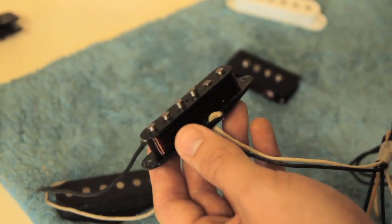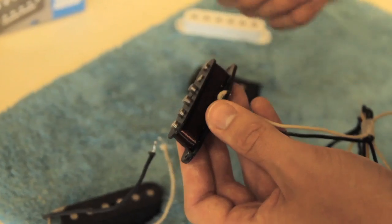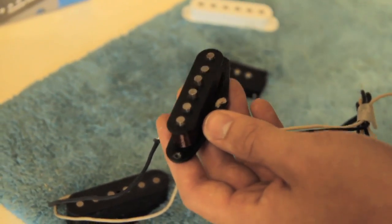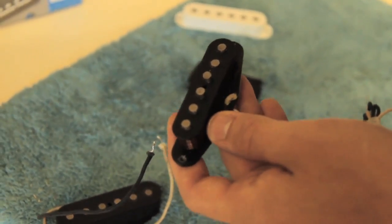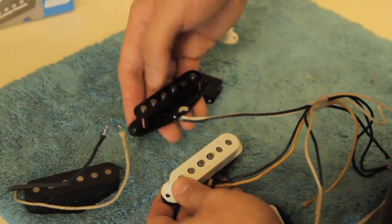What reverse wound, reverse polarity means is that that pickup is built with south poles facing up and it's wound the other way. I'm saying south just as an example. Reverse is just reverse or opposite as to what they usually do. This creates hum canceling.